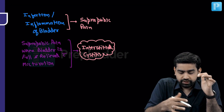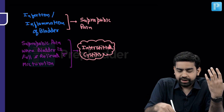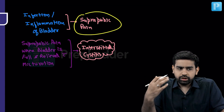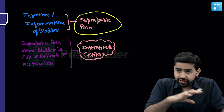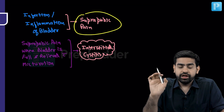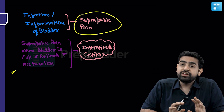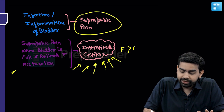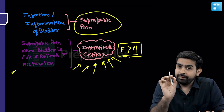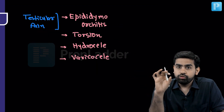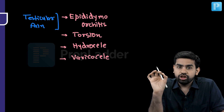If there is infection or inflammation of the bladder, the patient might have suprapubic pain. Now, if the patient says the pain increases in intensity as the bladder fills up and goes away after voiding, that is a characteristic feature of interstitial cystitis — very important. It is much more common in females. The giveaway point is suprapubic pain that increases as the bladder fills and is relieved on micturition.